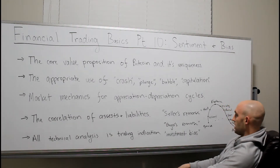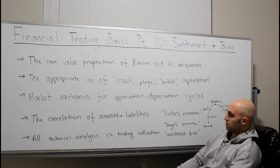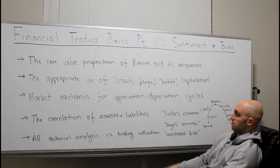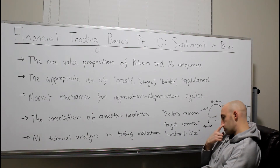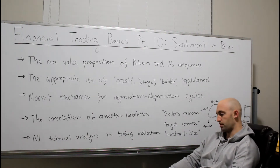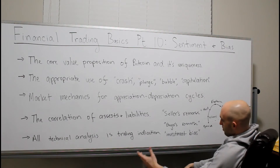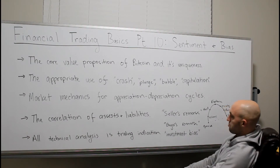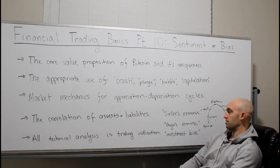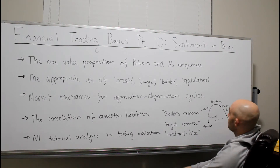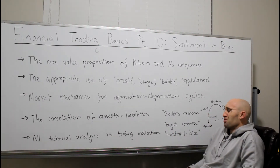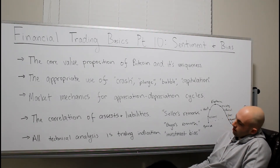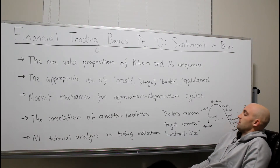The correlation of assets and liabilities — are assets correlated? Sometimes. What's the relation of unemployment to consumer spending to multiples on open market companies? Why do companies typically trade at forward earnings and not at cash flow? All of those are a result of sentiment. I'll probably do a different video on correlation of assets and liabilities, but personally I don't have strong opinions. All technical analysis is trailing indication — everyone who's looked at stocks or any real-time market knows that.